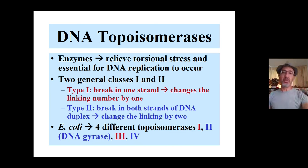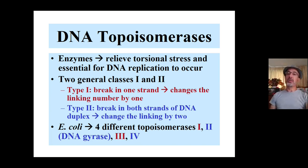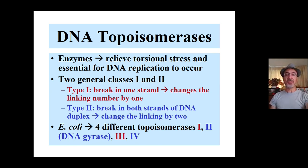In E. coli, which is a model system used in most laboratories, we have four different topoisomerases. Two of them are Type 1 — topoisomerases 1 and 3 — and two of them are Type 2 — topoisomerases 2 and 4. Topoisomerase 2 is well known as DNA gyrase, which is instrumental in DNA replication, being required for the process to proceed.